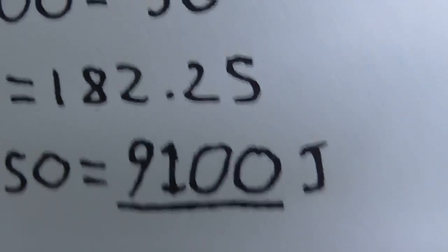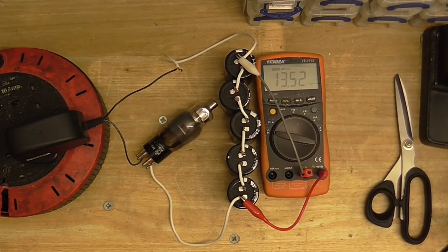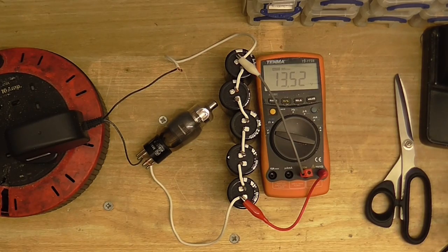So this is how many joules our supercapacitor bank contains. Over 9,000! So let's do some mass destruction with 9,100 joules.